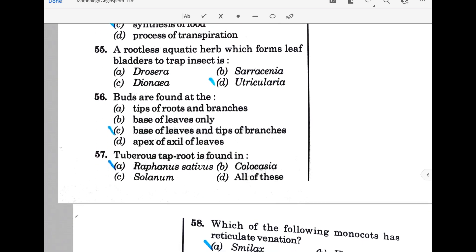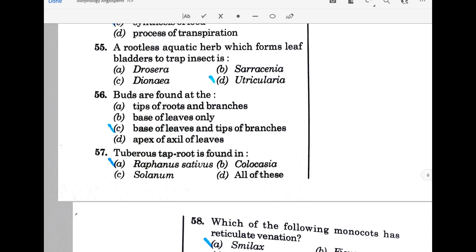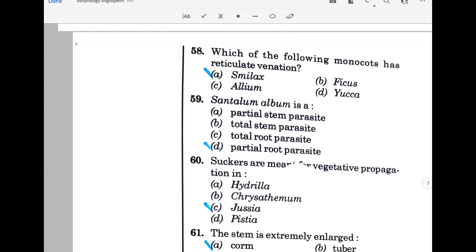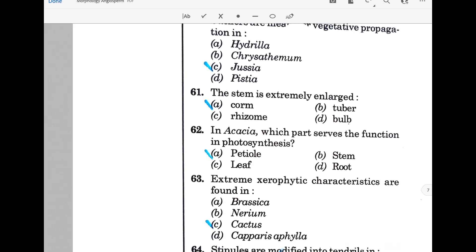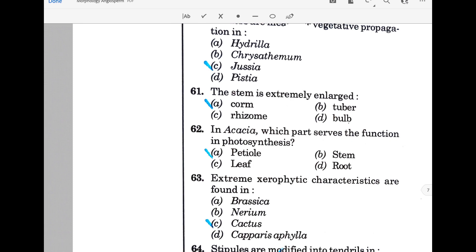A rootless aquatic herb which forms leaf bladders to trap insects is Utricularia. Buds are found at base of leaves and tips of branches. Tuberous tap roots are found in Raphanus sativus. Smilax is a monocot with reticulate venation. Santalum album is a partial root parasite. Suckers are meant for vegetative propagation in Juicy.